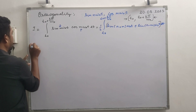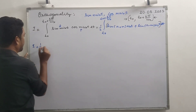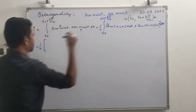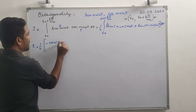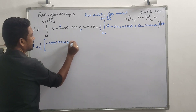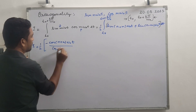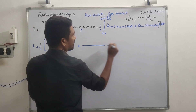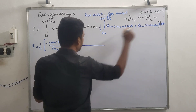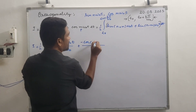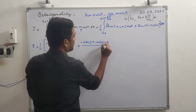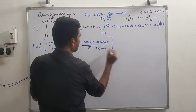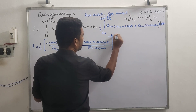Now we integrate directly. Using ∫sin(θ)dθ = −cos(θ), the first term gives −cos((n+m)ω₀t) divided by (n+m)ω₀, and the second term gives −cos((n−m)ω₀t) divided by (n−m)ω₀, with limits from t₀ to t₀ plus 2π/ω₀.